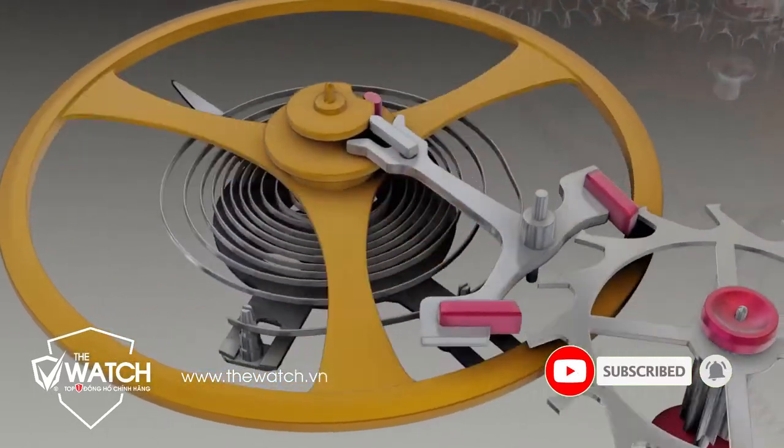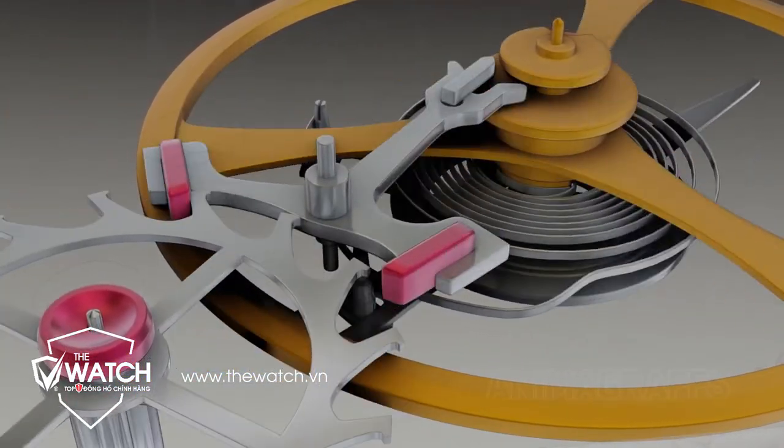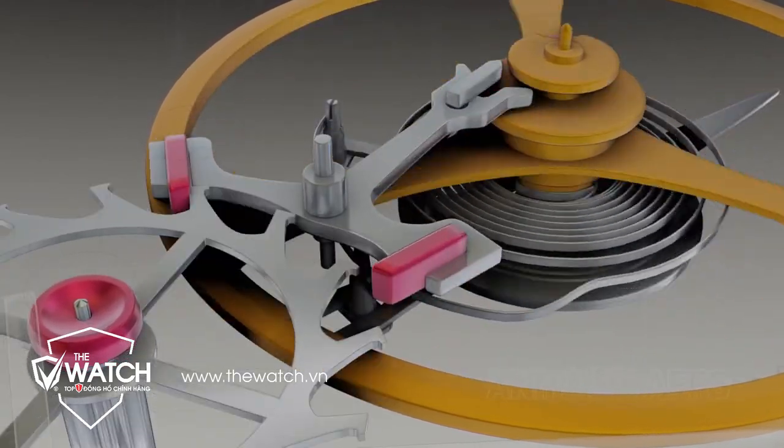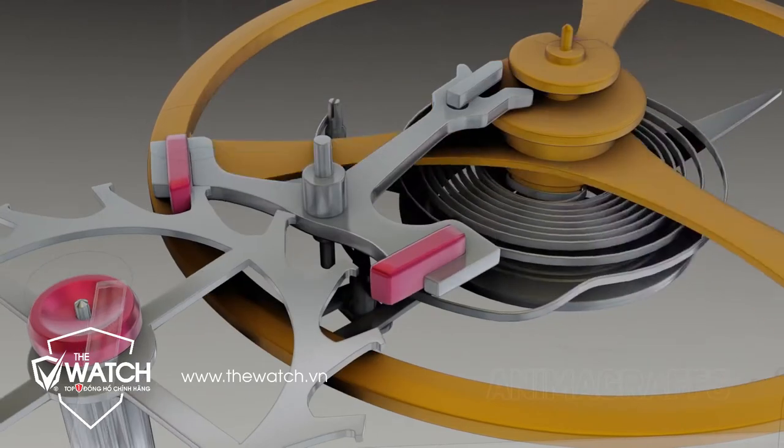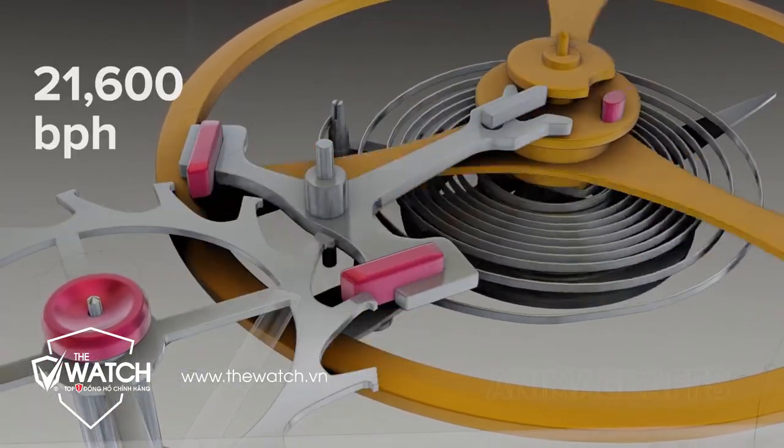The characteristic watch ticking sound is made by pallet jewels as they catch escape wheel teeth. Each incremental escape wheel rotation is called a beat. A common watch beat rate is 21,600 beats per hour, which is 6 beats per second.